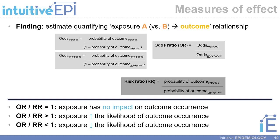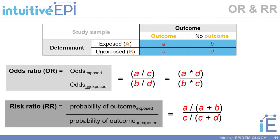We can estimate odds ratios or risk ratios — estimates that quantify the relationship between our exposure of interest and our outcome. An odds ratio or risk ratio of 1 indicates that the exposure has no impact on the outcome. Greater than 1 indicates the exposure increases the likelihood of the outcome, and less than 1 indicates it decreases the likelihood. We can calculate these by hand using placeholders A, B, C, and D in the 2x2 table.